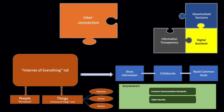The concept of interconnection is where we are moving from the internet of people to an internet of things and an internet of everything. Everything is now connected on a common network, letting us share information, collaborate, and reach common goals. To do this, we need common communication standards and we need to worry about security. That's the first principle of connectivity.